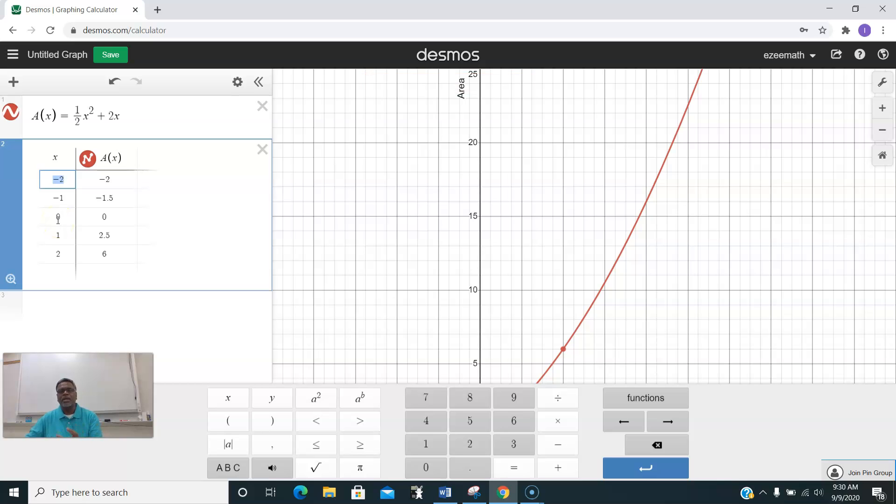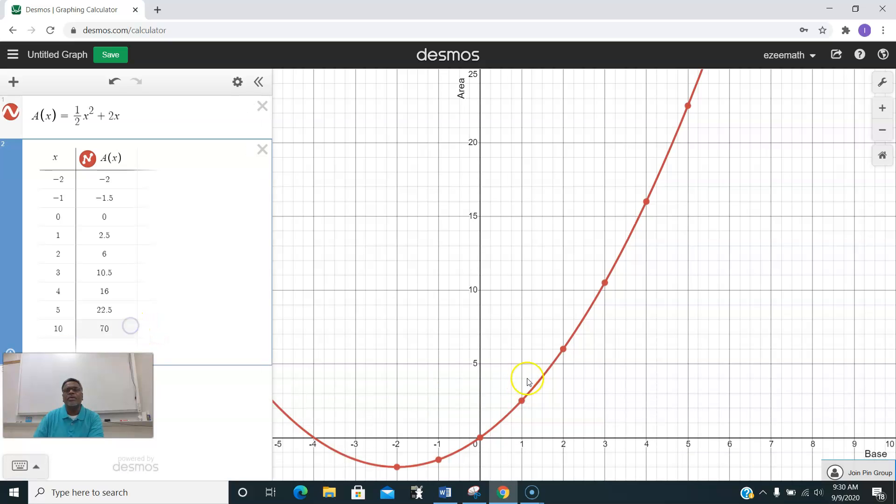If the base is 2, the area is 6. Likewise for 3 it is 10.5, then 4, 5, and even if you are looking for 10, if the base is 10, the corresponding area is 70. So that's how for any of these base values you can get the corresponding areas.